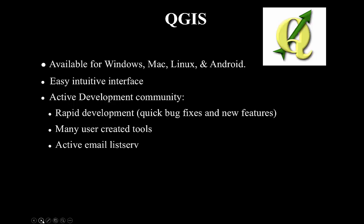Although the Android installer is in alpha and not easily installed, it will eventually be available for Android with an easy installer in the Play Store. QGIS has an easy, intuitive interface and an active development community with very rapid development. At the moment, a version is released every four months, with a long-term release happening once a year. There are many user-created tools and an active email listserv, which is one of the best ways to get support.